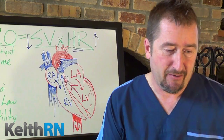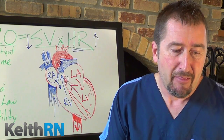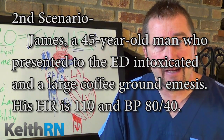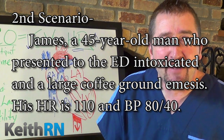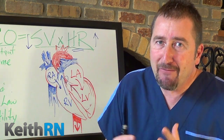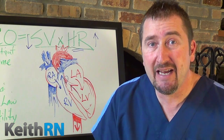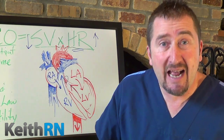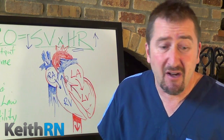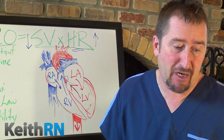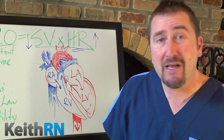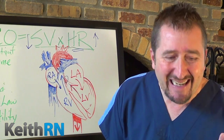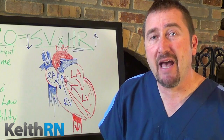In scenario two, the nurse must recognize what clinical data is relevant. This is a person with a GI bleed who is intoxicated with coffee ground emesis. That coffee ground emesis must be an immediate red flag — most likely digested blood. He's bleeding, probably from a gastric ulcer as a chronic alcoholic. He has a GI bleed, he's bleeding internally, and his heart rate is significantly elevated with a blood pressure that is too low.